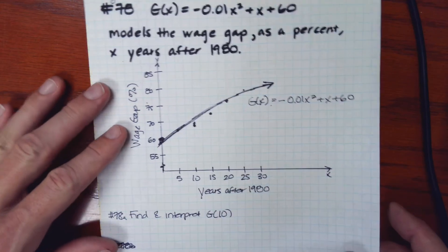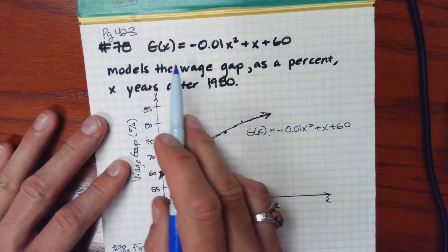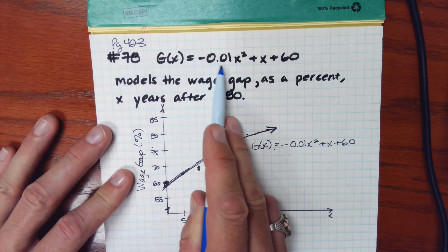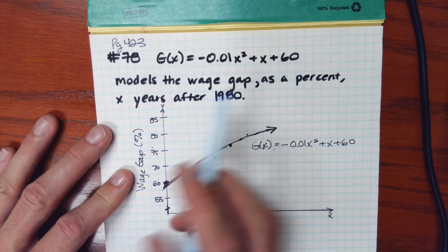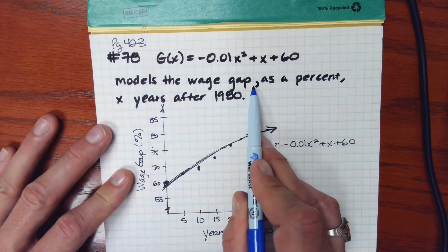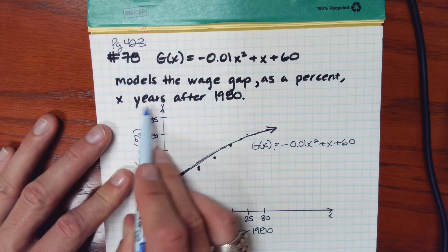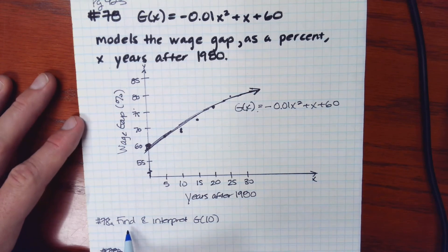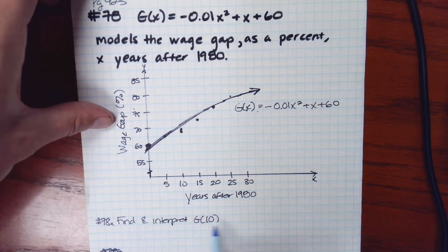And one final example, we have a function here to find g of x equals negative 0.01x squared plus x plus 60. And this models the wage gap as a percent x years after 1980. We're asked to find and interpret g of 10.